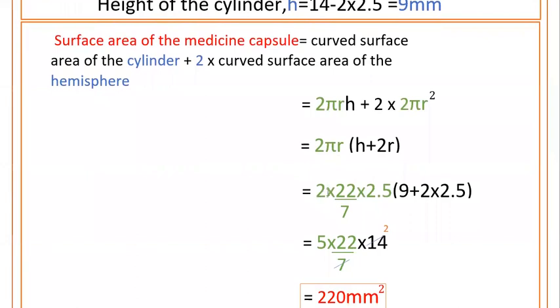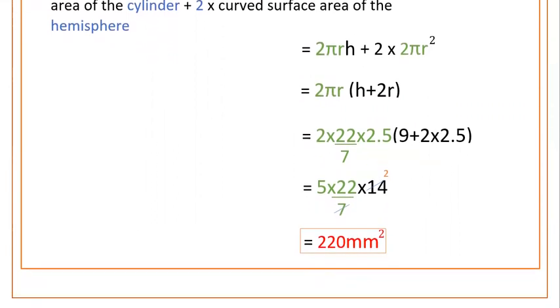And here 2 times 2.5 is 5. 5 times 22/7 times 14. So 7 into 14 is 2. Then 5 times 22 times 2 is 220 mm squared. This is the total surface area of the medicine capsule.